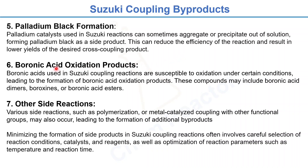The sixth byproduct is boronic acid oxidation products. The boronic acids used in these coupling reactions are susceptible to oxidation under certain conditions, leading to over-oxidation of the boronic acids and formation of products such as boronic acid dimers, boroxines, or boronic acid esters.